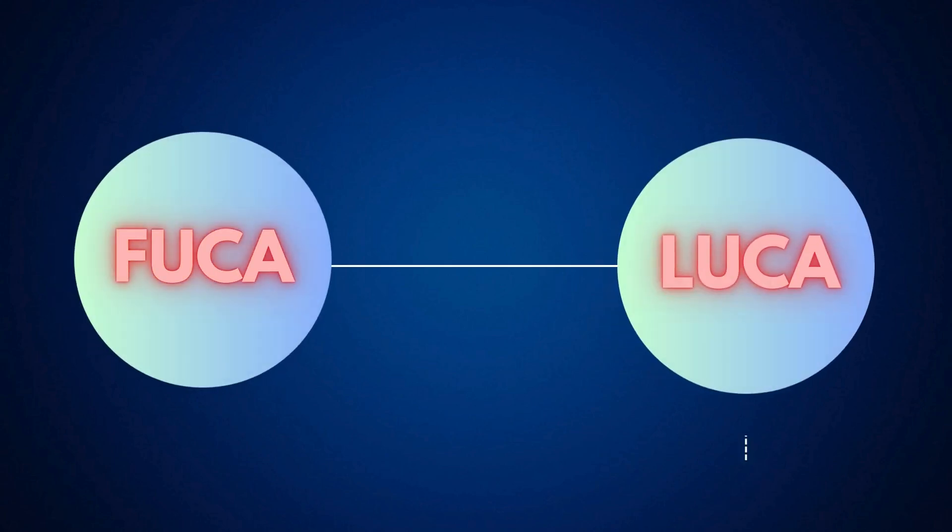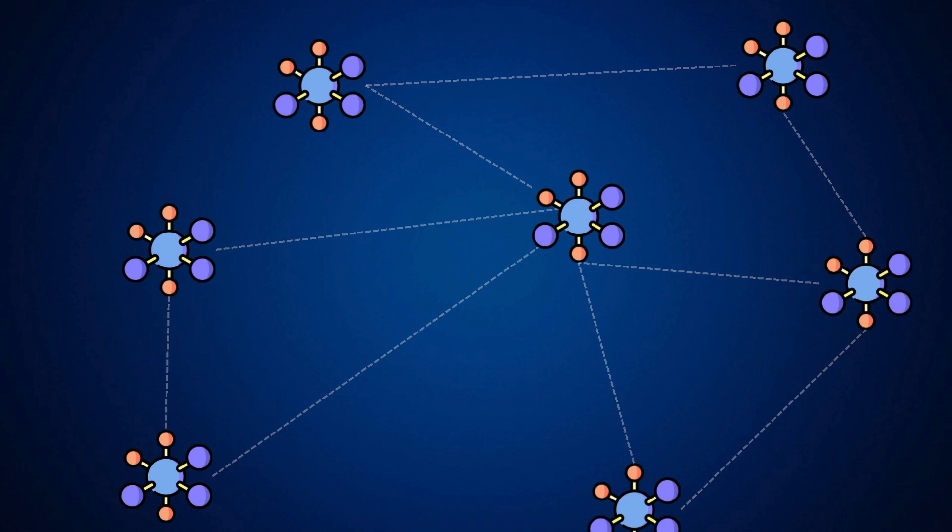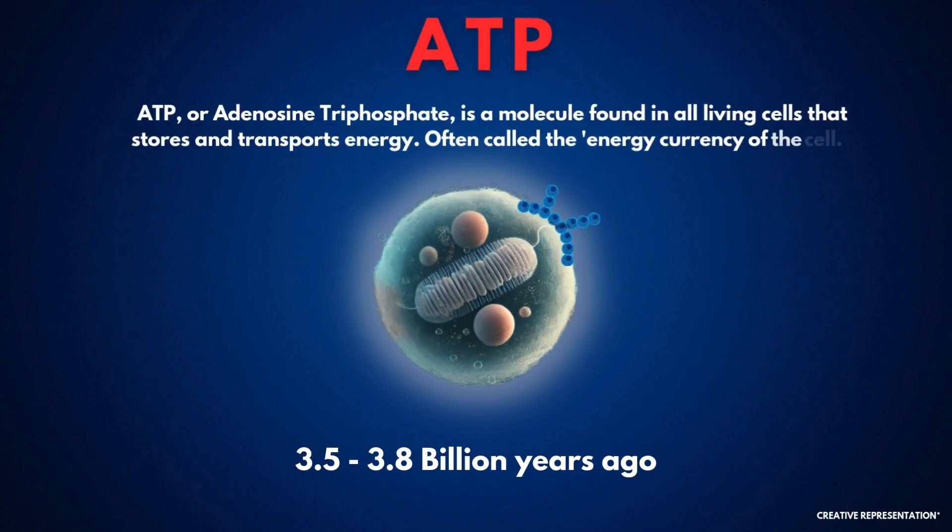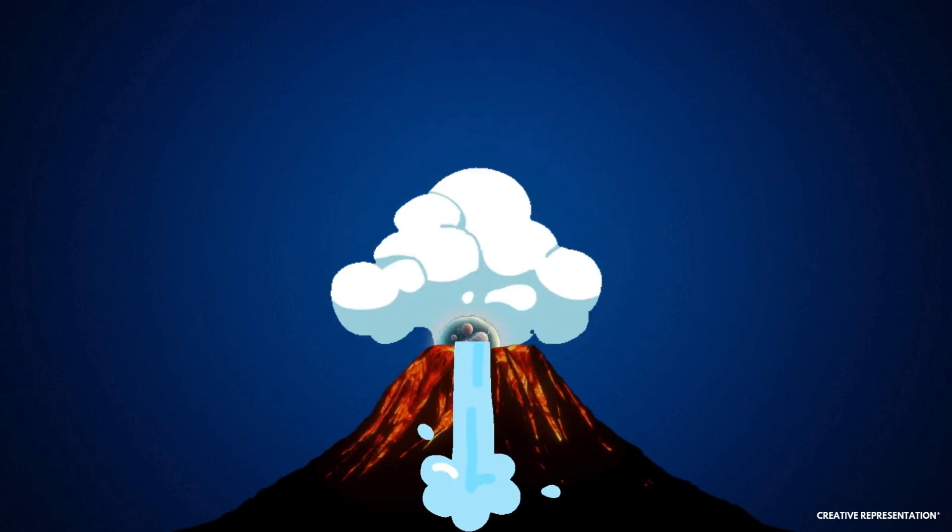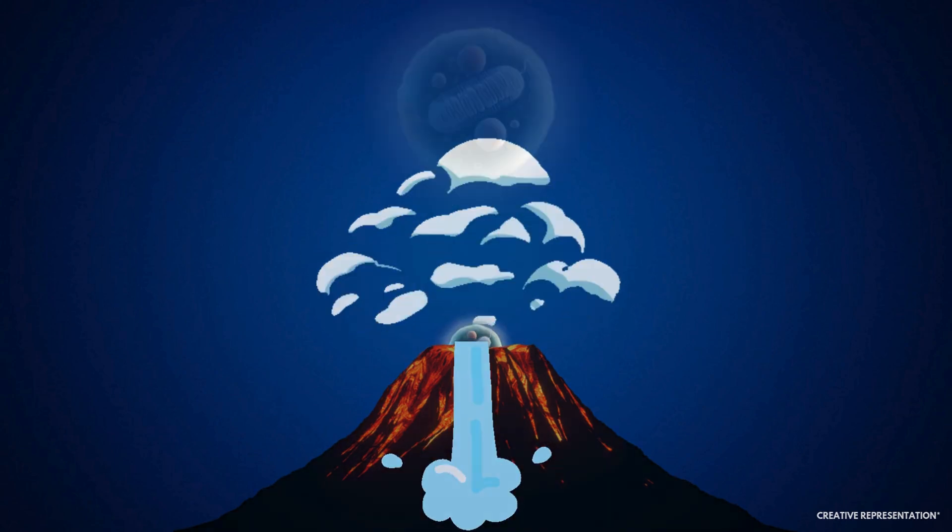FUCA lived before LUCA, the last universal common ancestor, and might have been a loose network of evolving molecules rather than a single cell. LUCA, which existed around 3.5 to 3.8 billion years ago, was more advanced. It had a membrane, used ATP for energy, and had genetic material. It likely lived in a hydrothermal vent environment, where it could harness energy from chemical reactions.